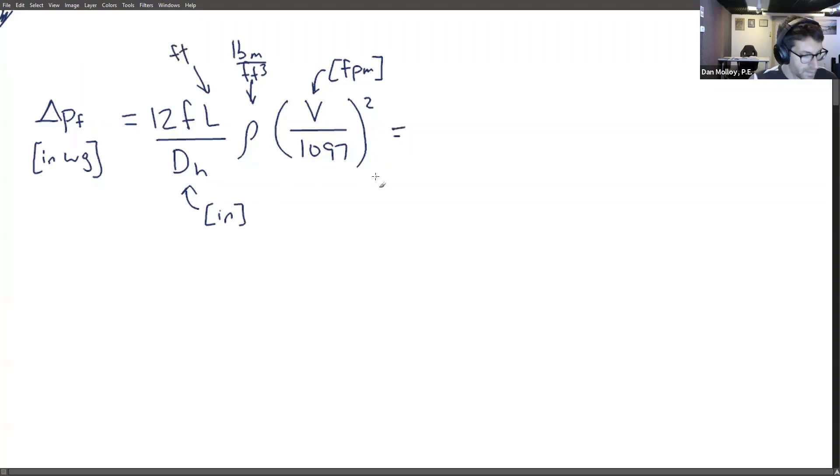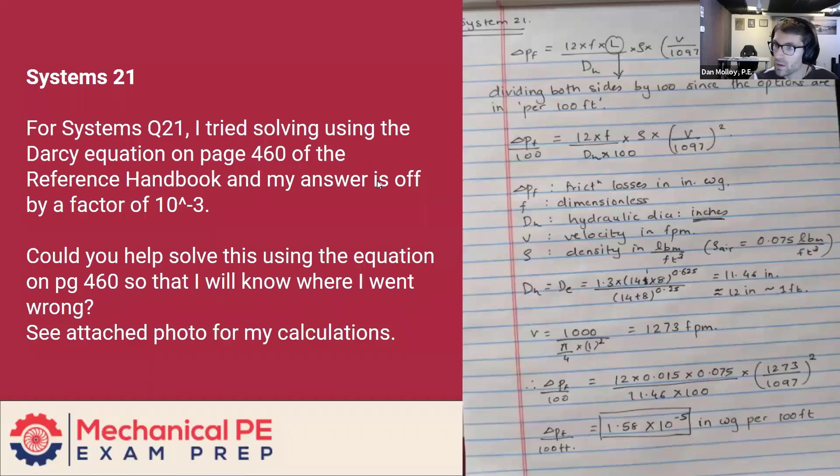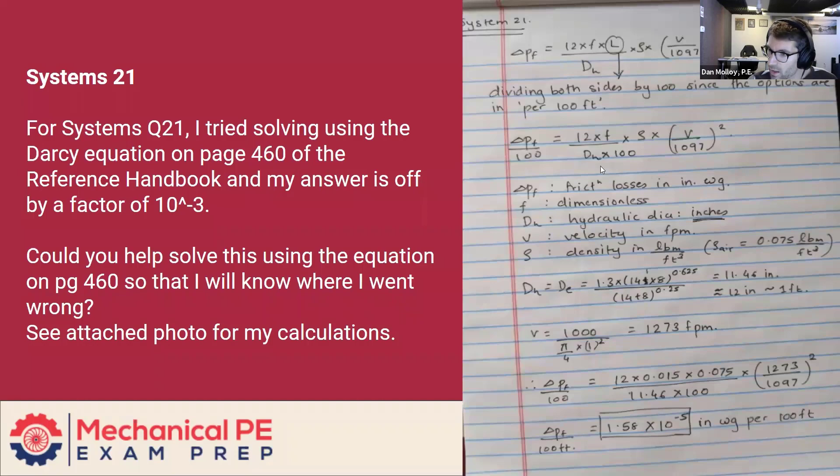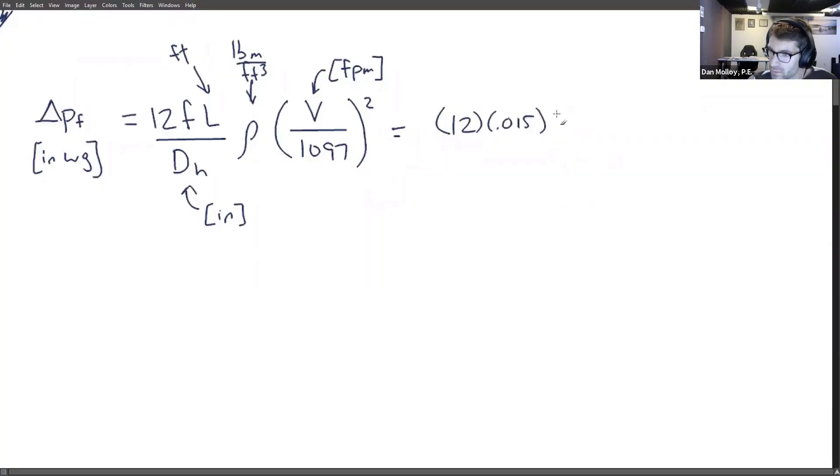So let's take a shot at substituting for this problem. We have 12 times the friction factor 0.015 times the length of the pipe. And I think this might have been the source of the confusion on here, dividing by 100.